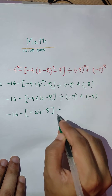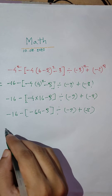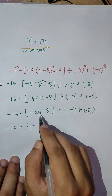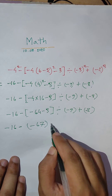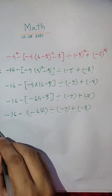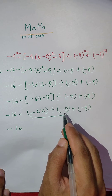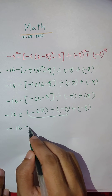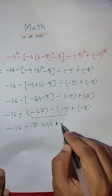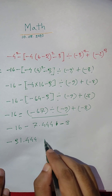Minus 3, divide. Minus 9, plus minus 8. Minus 67 divide 9, plus minus 8. Work this: minus 67 divided by 9 is minus 7.444, plus minus 8. Then minus 31.444 answer.